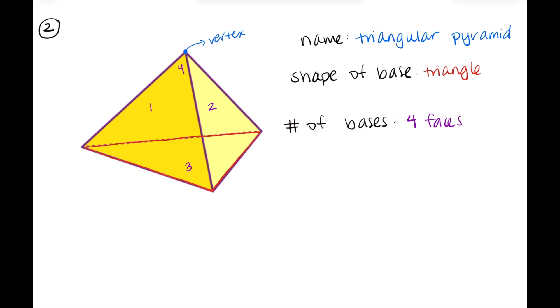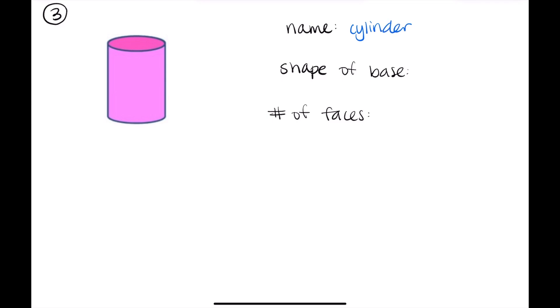Now we will move on to our third and final practice problem for today's lesson. Again, we're going to classify it by name, by shape of the base, and by the number of faces it has. So the name of this figure here in pink, it's called a cylinder. It was in our diagram earlier in the video. And to figure out the shape of the base, I'm going to draw a little dotted red line on the bottom. It's a little bit hard to see in this diagram, but if we look at the top base, that one's also a circle. So the shape of our bases for our cylinder are circles. Now for the number of faces, we have three. We have the top, the bottom, and the side. So all together, we have three faces total.